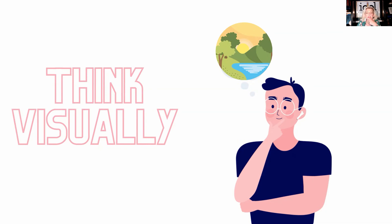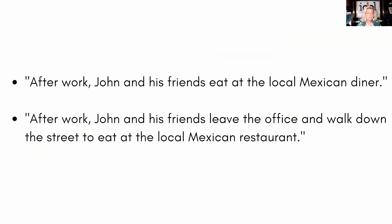For example: 'After work, John and his friends eat at the local Mexican diner.' That is pretty easy — I can imagine John sitting in the restaurant with his friends in a Mexican diner, and you can show that through backgrounds and scenes. However, if you say: 'After work, John and his friends leave the office and walk down the street to eat at the local Mexican restaurant' — now you have to show all those things and you've extended what you're showing on screen. If you write simply and think about the visuals, it's much better to just write 'John and his friends eat at the local Mexican diner after work.'